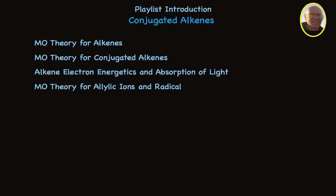This turns out to be really important, including the fact that the initial step for vision involves the absorption of light by an extended conjugated pi system. You'll see why it's an extended conjugated system that's involved in the chemistry of vision.